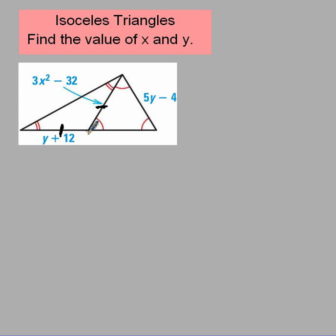One of those sides is y plus 12, and another one of those sides is 3x squared minus 32. But hey, if they're equal, then I can just go ahead and say, well, y plus 12 is going to be the same thing as 3x squared minus 32. But I can't really solve that because I've got x's and y's, and I don't have anything to really work with on that.